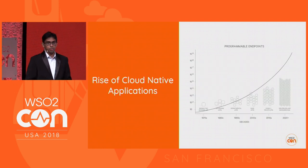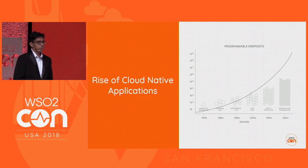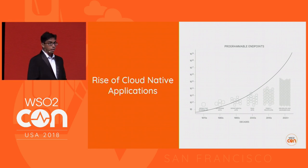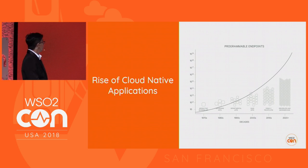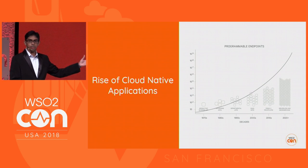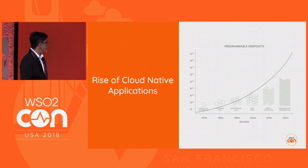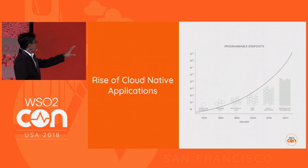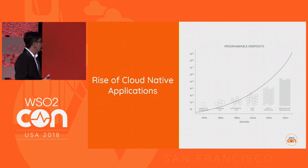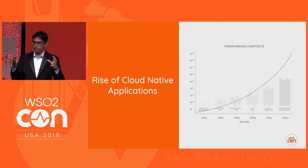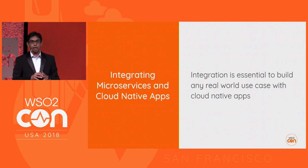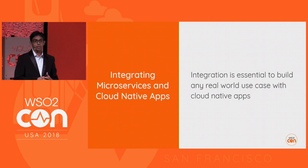Cloud-native applications are on the rise. Most existing architectures are shifting towards cloud-native architecture. As a result, the number of components — serverless functions and microservices — is also increasing. You used to have some kind of monolithic system and you segregated that into microservices or serverless functions, and those are connected to each other over the network. So integration of cloud-native applications and microservices is becoming the number one challenge in realizing cloud-native architecture.